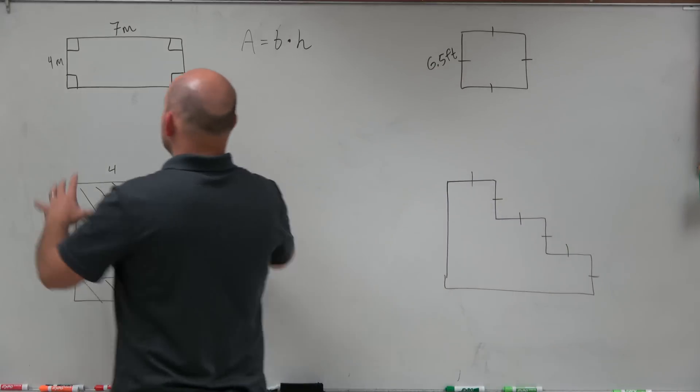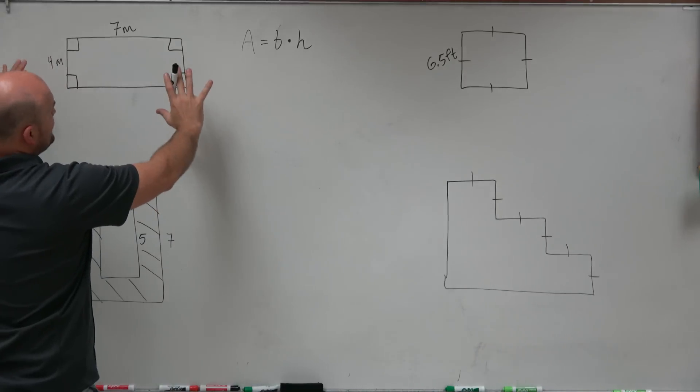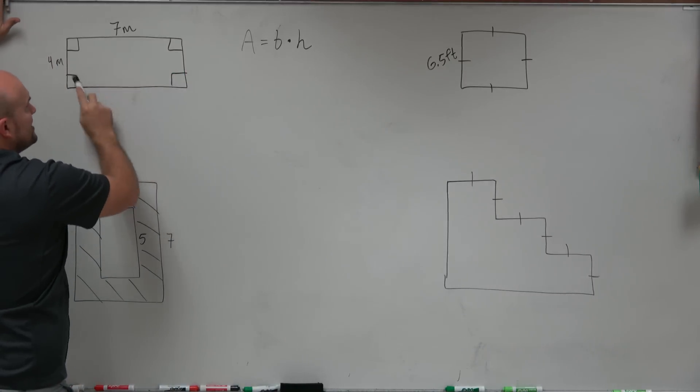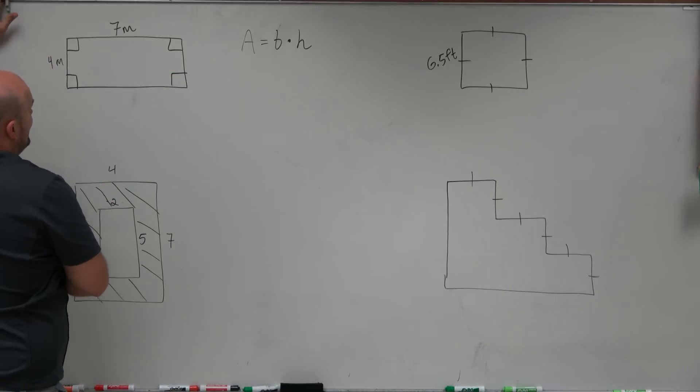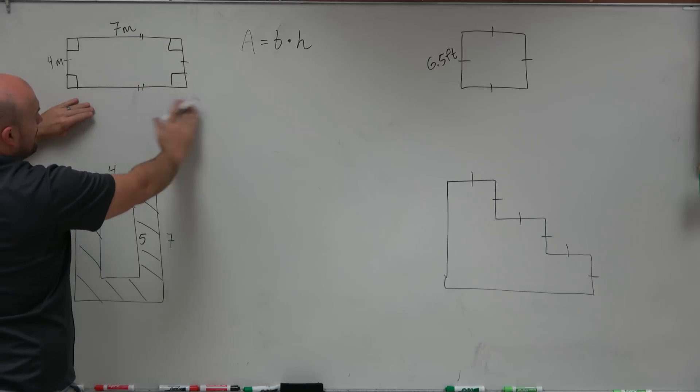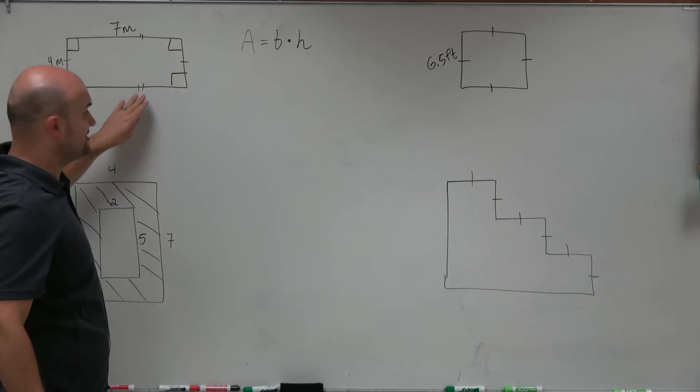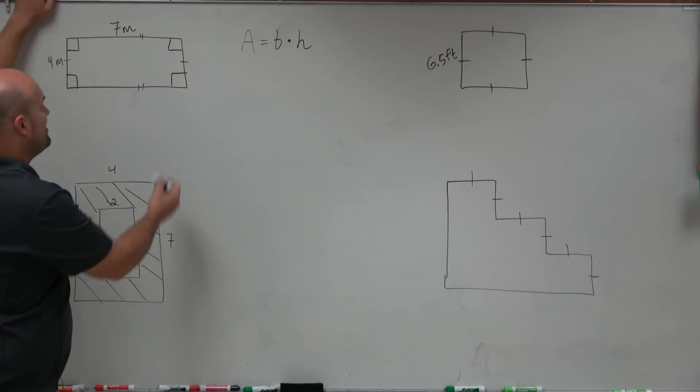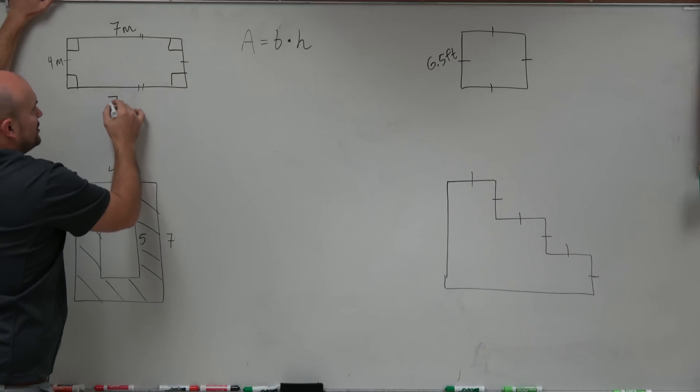Over here you can see in this example we have a rectangle. We know it's a rectangle because one of the characteristics of rectangles is having four right angles. What's also important about knowing a rectangle is you have opposite sides that are equal in measure. In this case you can see right now we don't have any measurement for this base. However, since I know these opposite sides are congruent, I know that's also going to be 7 meters.